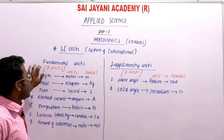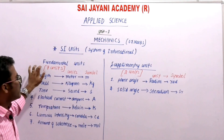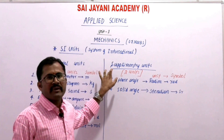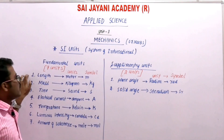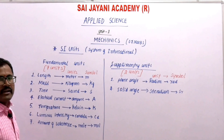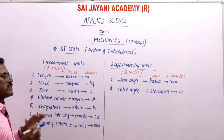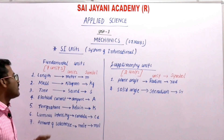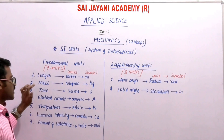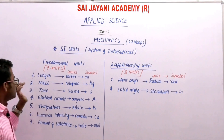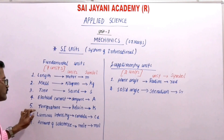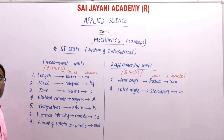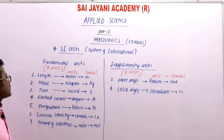In the SI system, there are mainly seven fundamental units and two supplementary units. The seven fundamental quantities are: first, length; second, mass; third, time; fourth, electric current; fifth, temperature; sixth, luminous intensity; seventh, amount of substance.